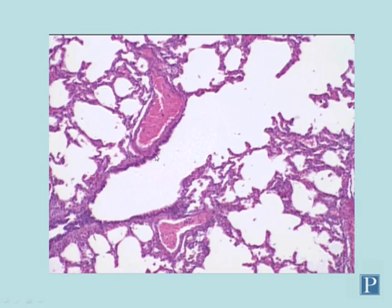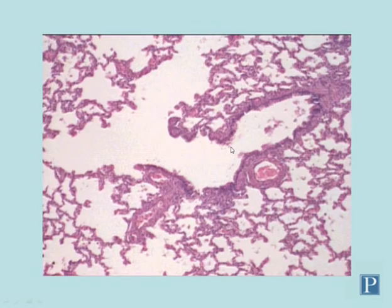Another difference between a terminal bronchiole and a respiratory bronchiole is the epithelium. The epithelium of a terminal bronchiole is simple columnar, and you can see it flattens out becoming simple cuboidal in a respiratory bronchiole. Here's another terminal bronchiole with that thicker epithelium, branching off to form two respiratory bronchioles.